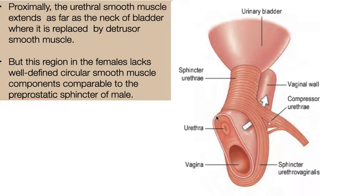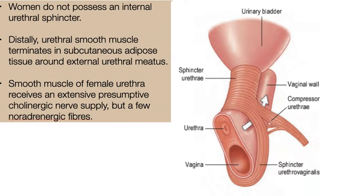The urethral smooth muscle extends as far as the neck of the bladder, where it is replaced by detrusor smooth muscle cells. However, this region differs in females as it lacks the well-defined circular smooth muscle component comparable to the preprostatic sphincter of the male. Females do not possess an internal urethral sphincter; distally the urethral smooth muscle cells terminate in the subcutaneous adipose tissue around the external urethral meatus. Smooth muscle cells of the female urethra receive an extensive presumptive cholinergic nerve supply but few non-adrenergic fibers.